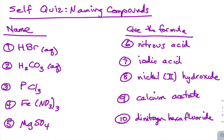Hi everyone. This video is what I call a self-quiz. What I'd like you to do is pause the video and on your own piece of paper, with a periodic table close in hand, attempt to name the first five compounds and then provide the formula for the next five. This is very similar to the quizzes we have in class, and this should be good practice for you all. So go ahead and hit pause, and then I will go over the answers.